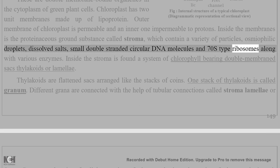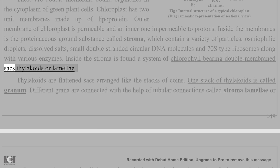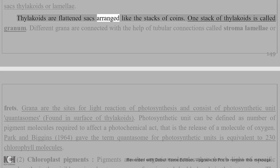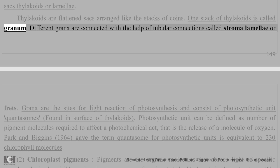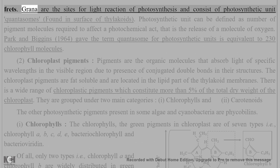The stroma also contains 70S type ribosomes along with various enzymes. Inside the stroma is found a system of chlorophyll-bearing double membrane sacs called thylakoids or lamellae. Thylakoids are flattened sacs arranged like stacks of coins. One stack of thylakoids is called a granum. Different grana are connected with the help of tubular connections called stroma lamellae or frets. Grana are the sites for light reactions of photosynthesis.